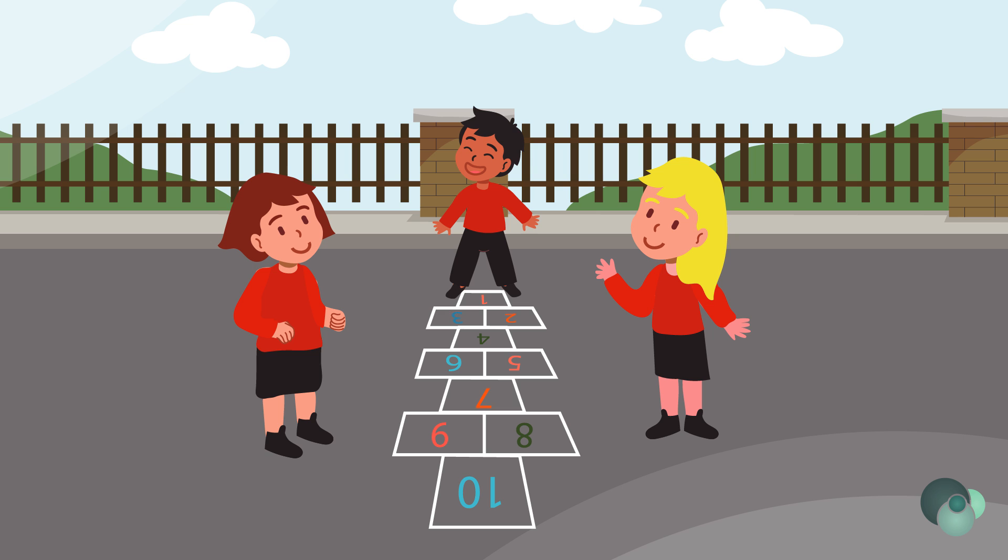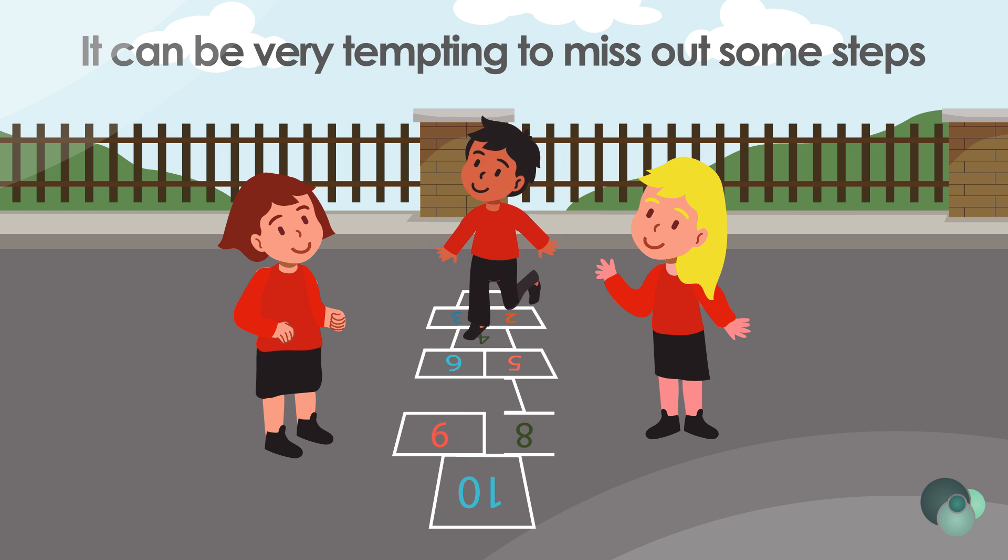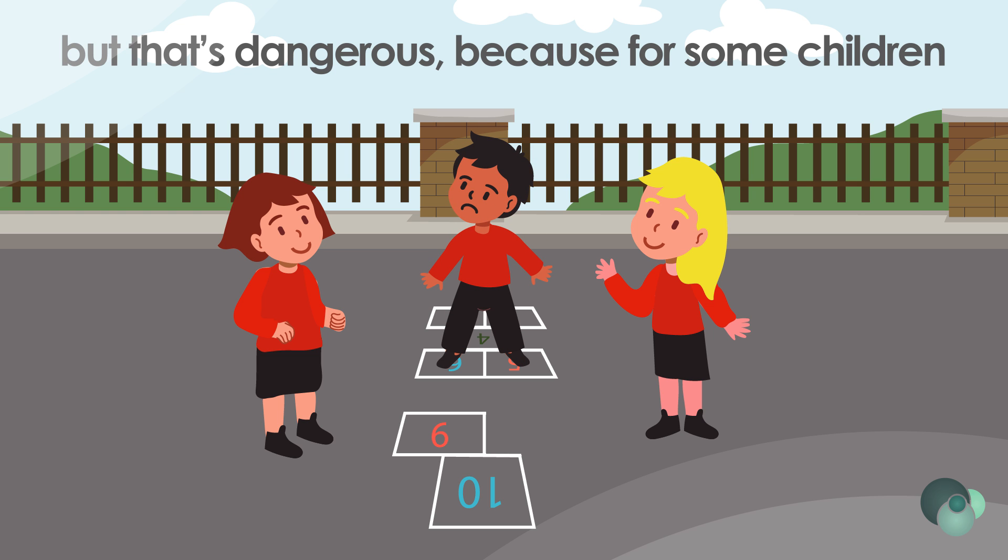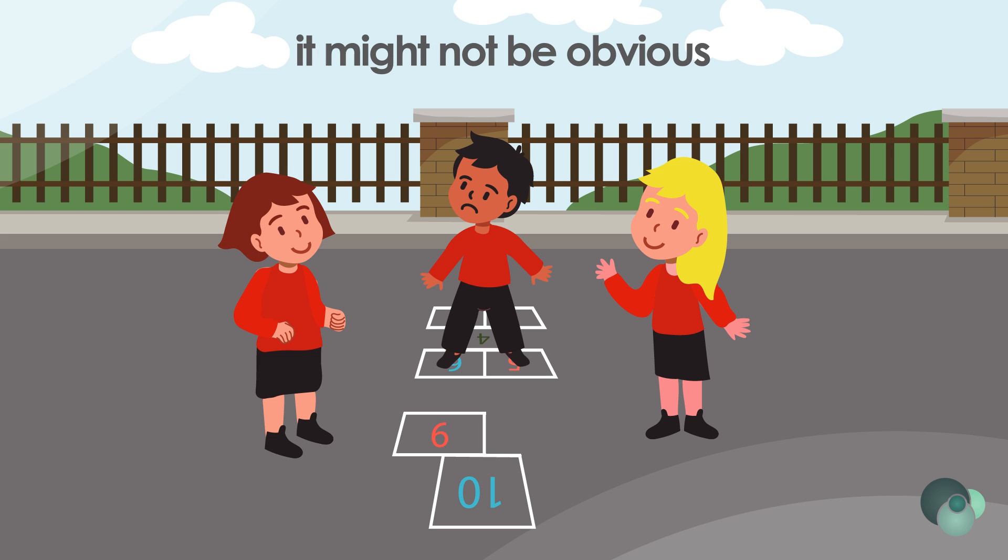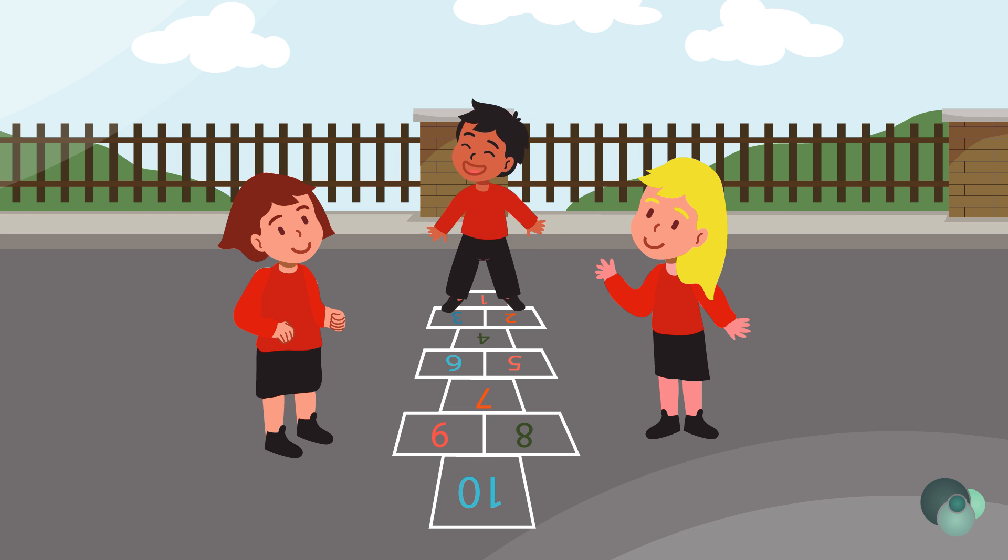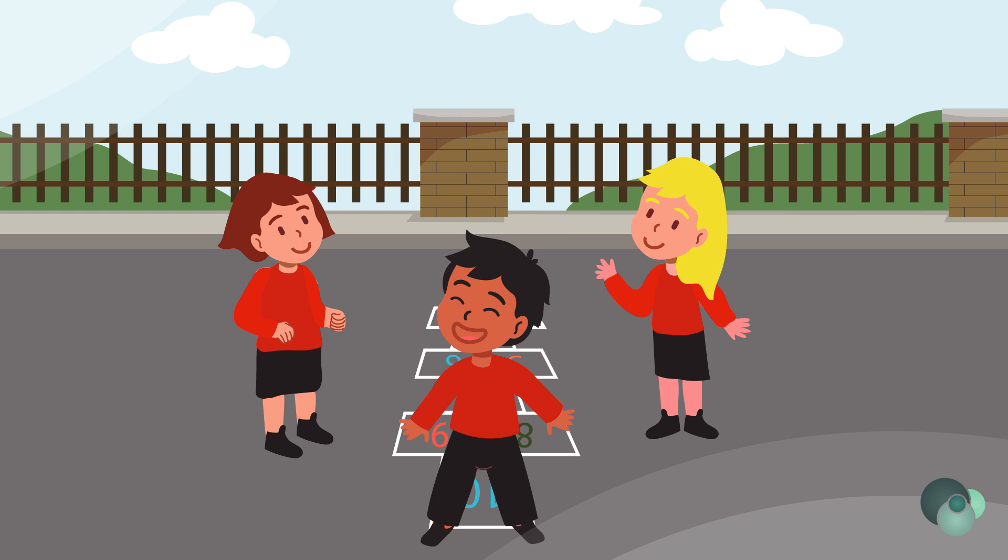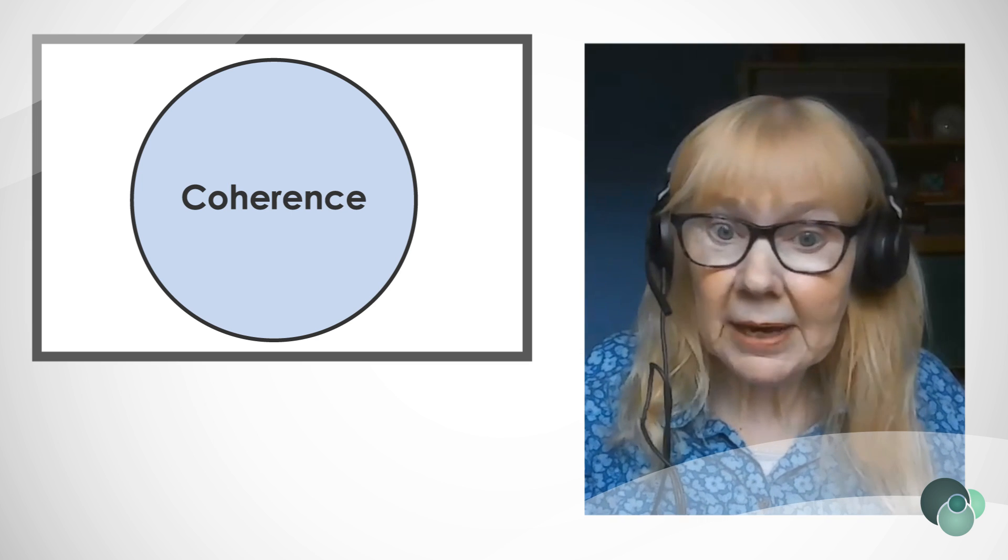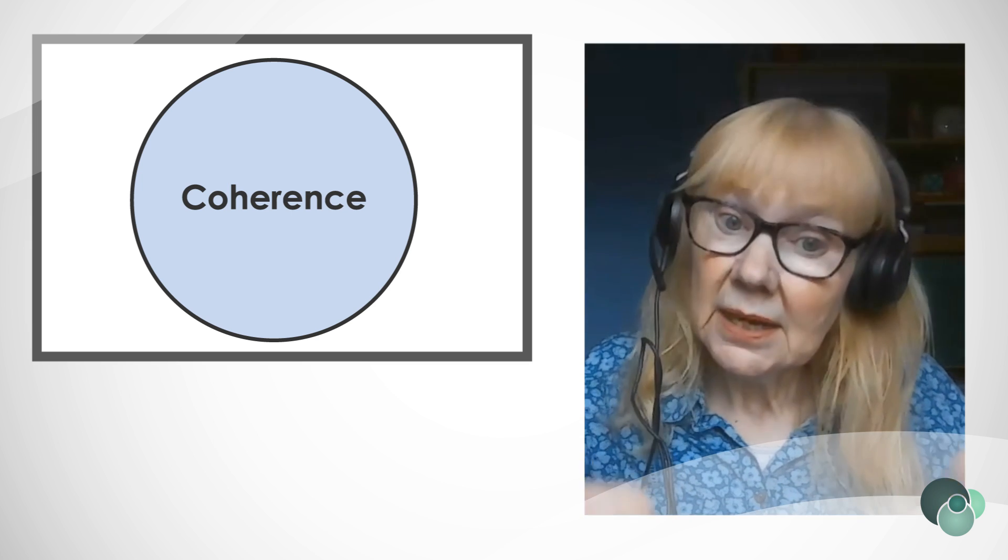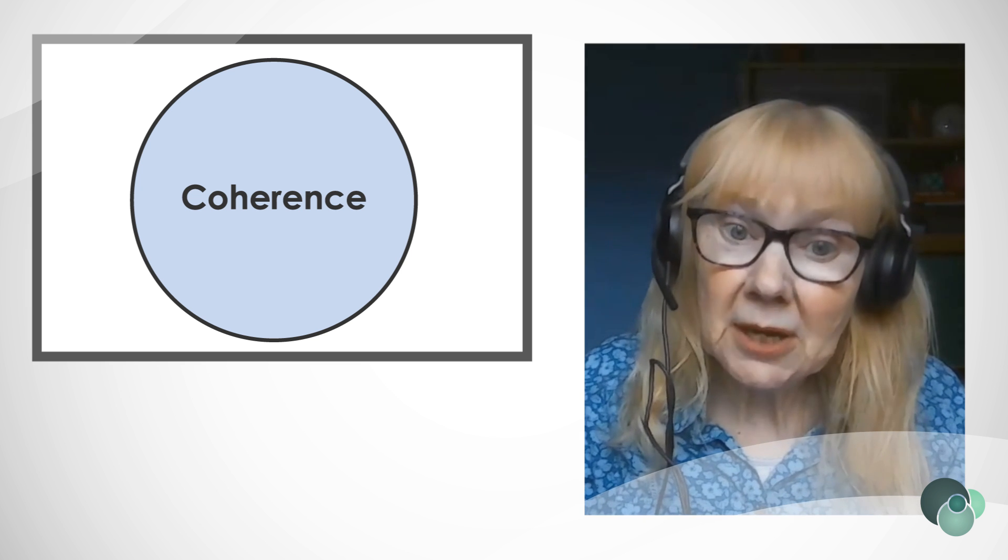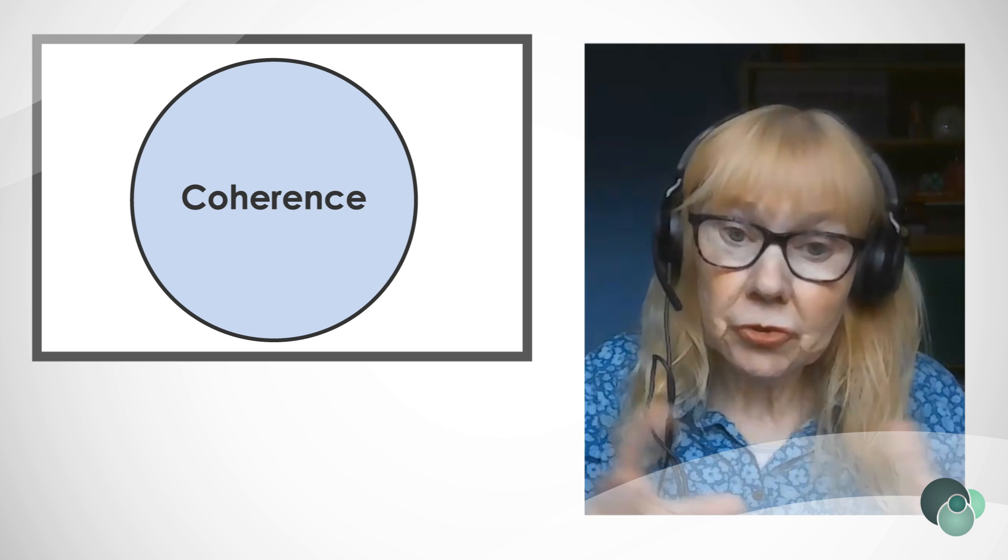It can be very tempting to miss out some steps and say, oh, I'm not going to do that, that bit's obvious. But that's dangerous because for some children it might not be obvious. Even though it might seem too easy, actually if it's easy it won't do children any harm. No child will be harmed by it being easy. But if we've missed out steps, then we risk the learning becoming unsuccessful and leaving children behind.